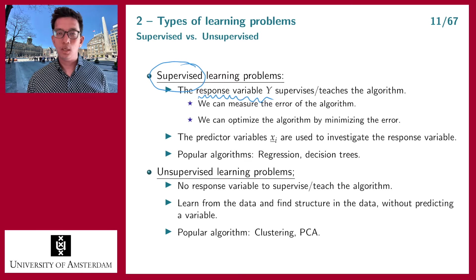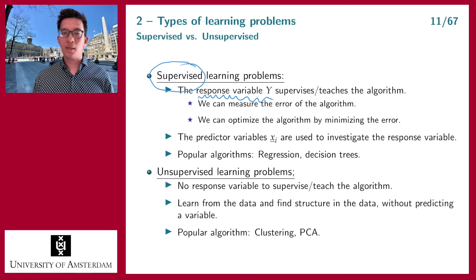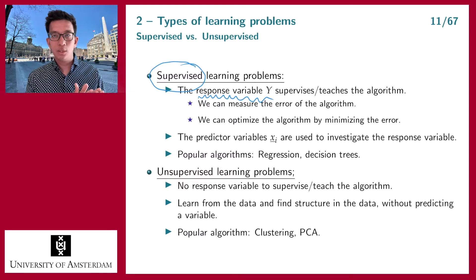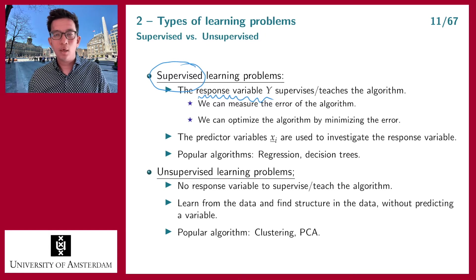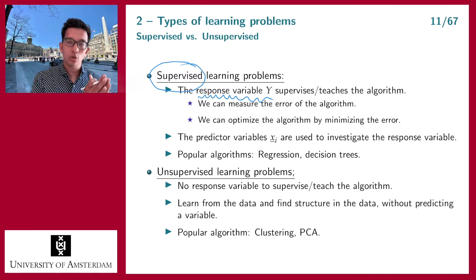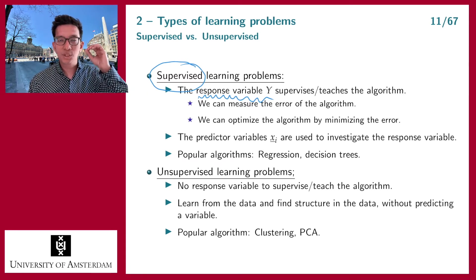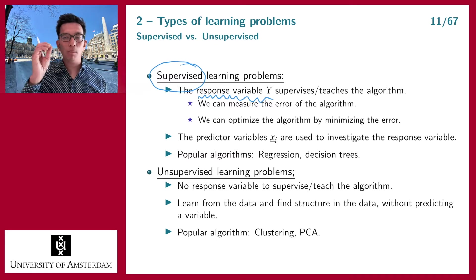In supervised learning you have a response variable Y. As explained in the previous video, Y is the variable you are interested in — for example, the number of claims of your policyholders, or the value of Bitcoin in the next year. If you make a prediction, how good or bad it is depends on the realization of Y. If you are predicting the number of claims next year for all your policyholders, you make your predictions today, wait one year, and then for each policyholder you check what number of claims they actually had and compare it to your prediction.